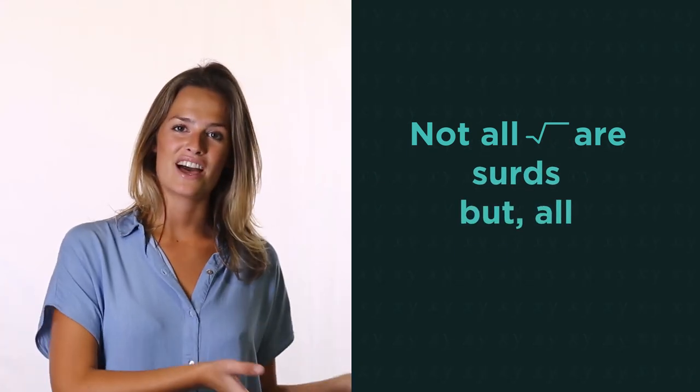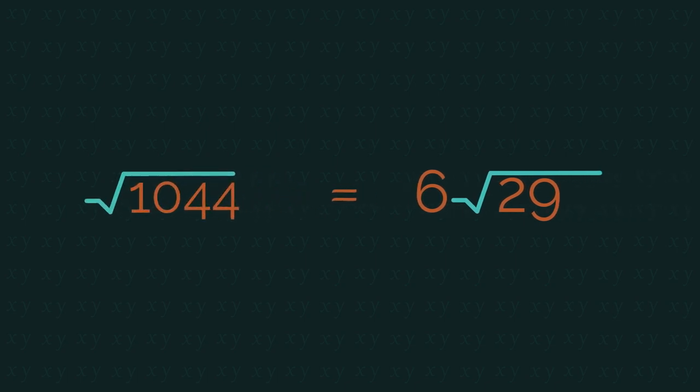So not all square roots are surds, but all surds are square roots. Let's have a look at simplifying surds. Six root 29 is the simplified version of square root 1044, but we'll start with much simpler examples.